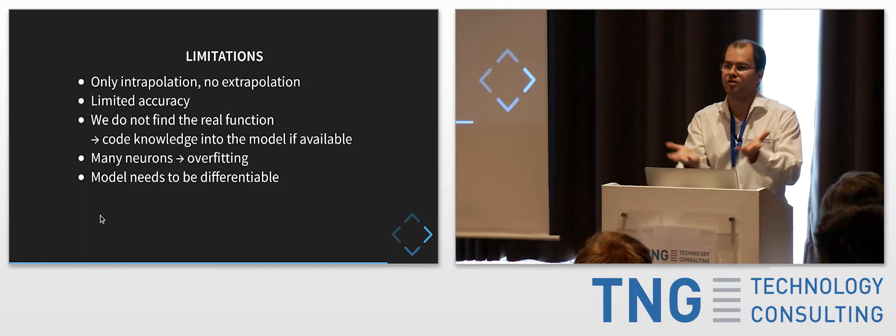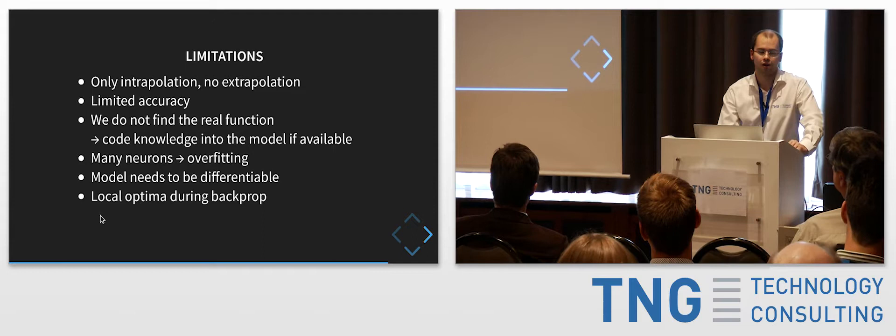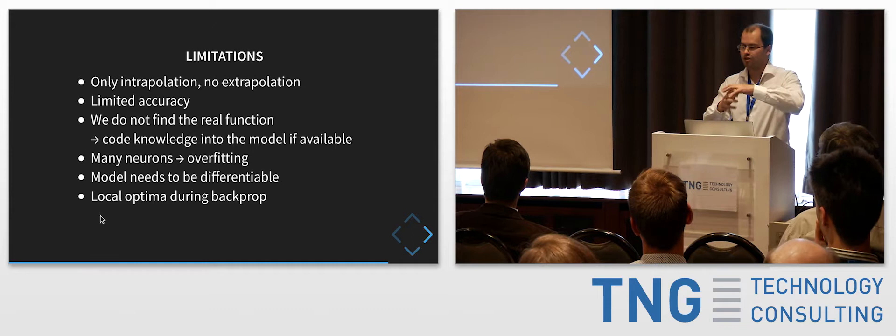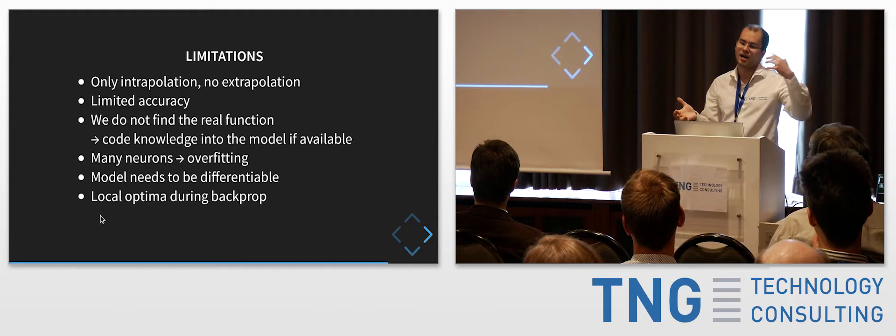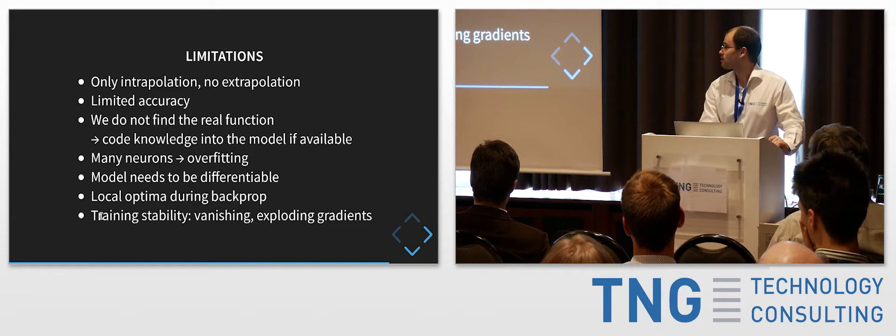The model also needs to be differentiable for backpropagation with gradient descent. You could get stuck in local optima during backprop, but this is normally not a big problem because with such a vast set of parameters, some part might get stuck while the other parts compensate.